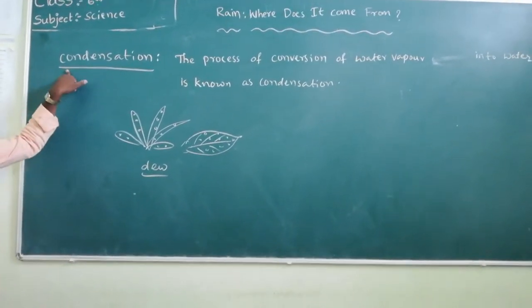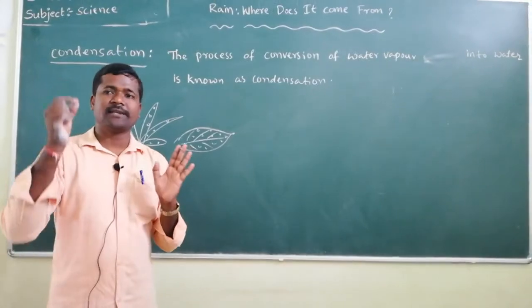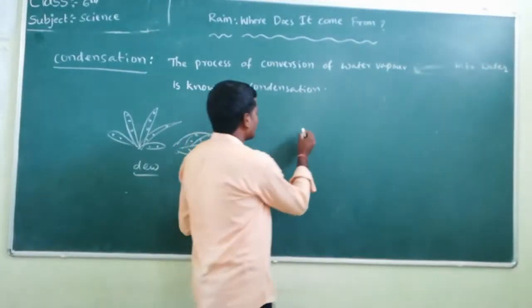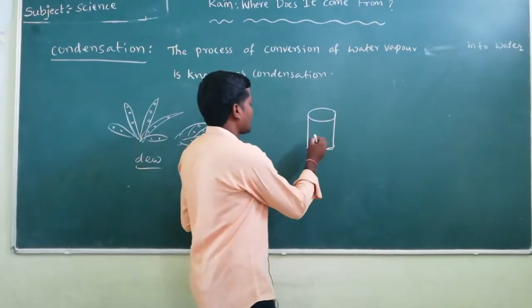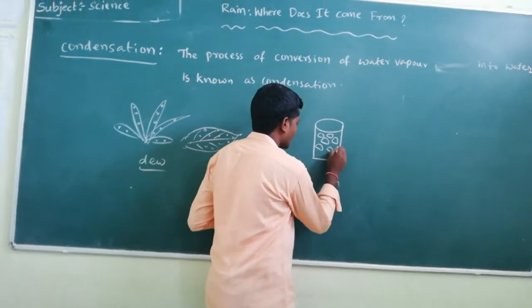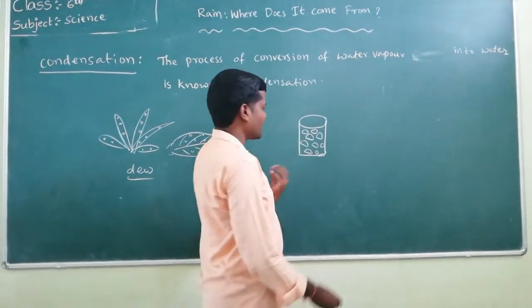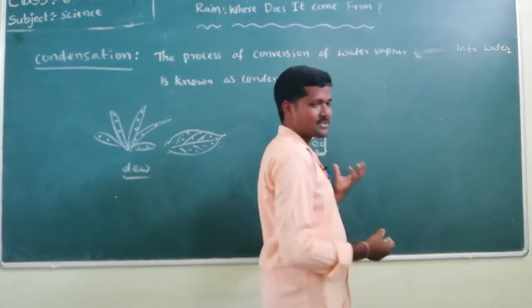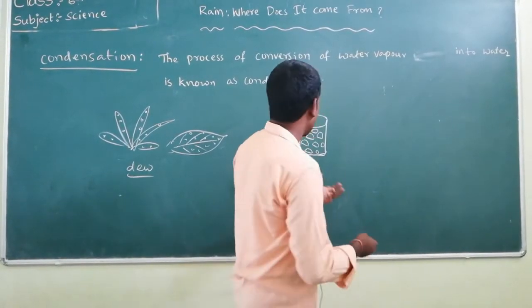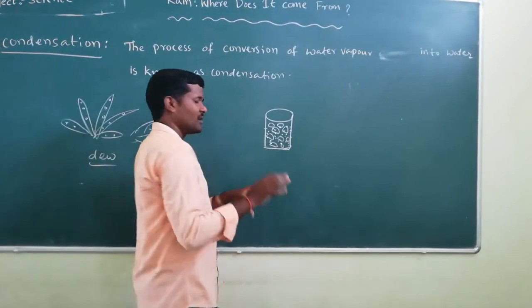When cool conditions are applied to the environment or air, water vapor converts into small size water droplets. For example, if you take a glass of water and add some ice pieces, do you observe any changes on the surface of the glass? If you put a glass with ice cubes on a table, after a few minutes you observe small size water droplets formed on the walls of the glass.